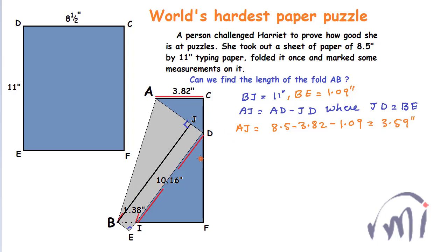And now we have found AJ we have BJ also so AB square will be equal to BJ square plus AJ square and this will be equal to square of 11 that is 121 plus square of 3.59 which is equal to 12.88. So this will be equal to 133.88.